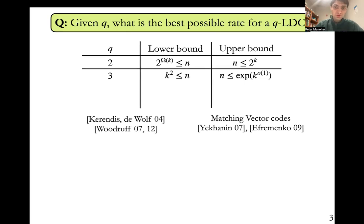On the other hand, the lower bound is actually quite poor. We only know that n is at least k squared. So this polynomial versus sub-exponential function is a pretty big gap. This lower bound is due to Kerenidis and de Wolf, which initially came with some additional polylog factors that then got shaved off in later work by David Woodruff.